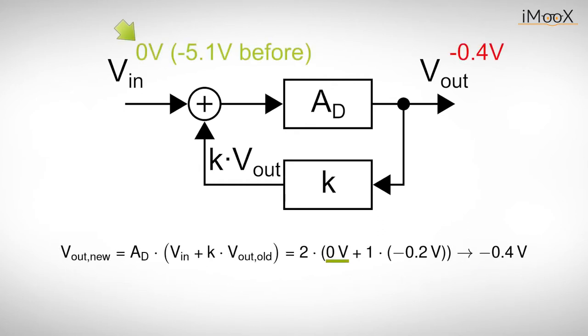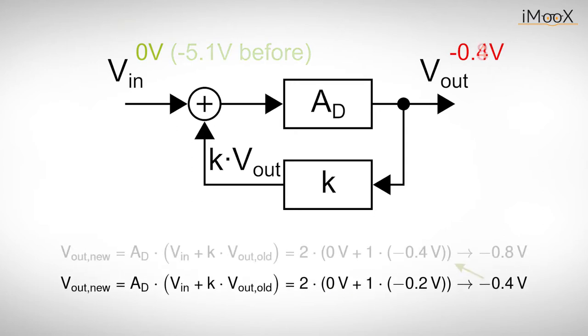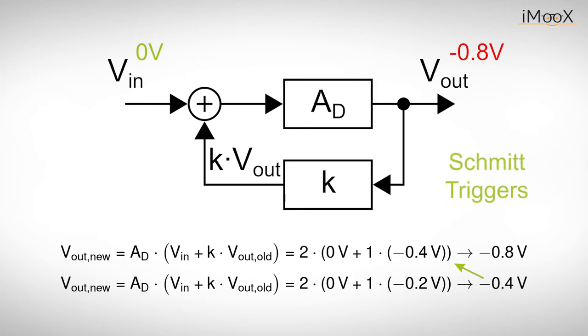We just managed to switch the output voltage by applying an appropriate input voltage. We do not even have to apply this input voltage all the time. Just a very short amount of time is sufficient. This configuration is able to detect short changes of the input voltage beyond a certain limit. It behaves like the trigger of an oscilloscope, which we explained in one of our other videos. Hence these circuits are called Schmitt triggers, honoring the inventor.